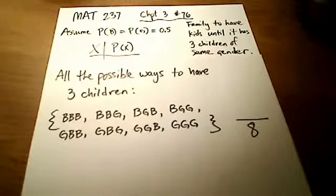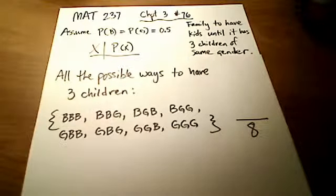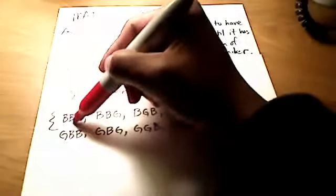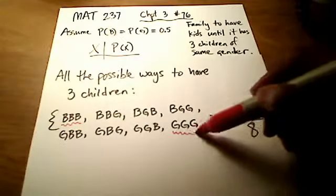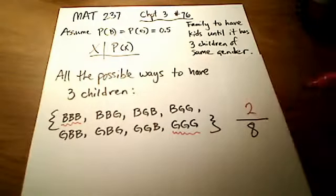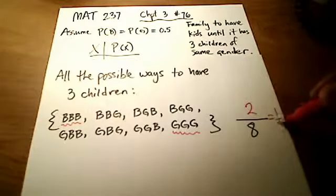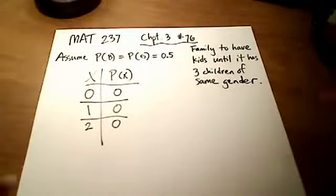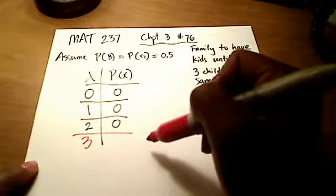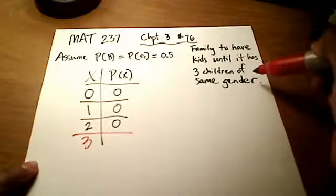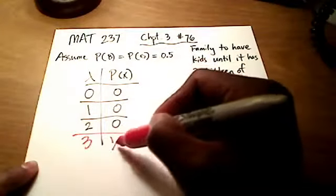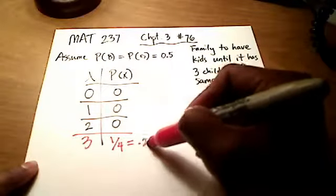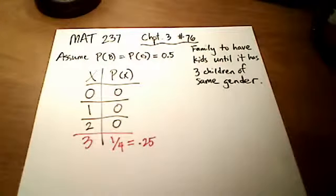How many of these have exactly three kids of the same gender? There are only two cases: all three boys and all three girls. So we have two out of eight, or one-fourth. The probability that three children are exactly the same gender is 1/4, or 0.25 on WebAssign.